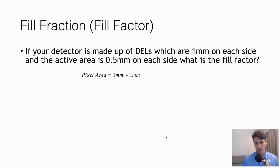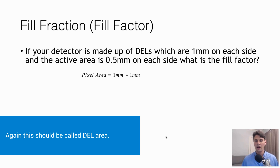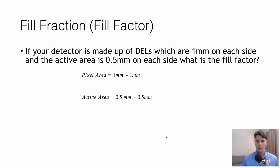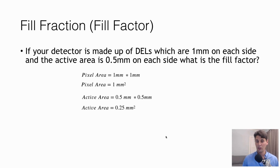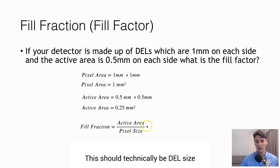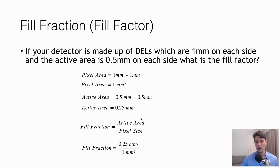The pixel area is 1 millimeter by 1 millimeter, which is 1 millimeter squared. The active area is 0.5 millimeters by 0.5 millimeters, which is 0.25 millimeters squared. The fill fraction is the active area divided by the pixel area — the units cancel out, so the fill fraction is dimensionless. For this case, the fill fraction is 0.25.